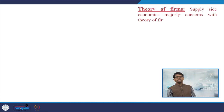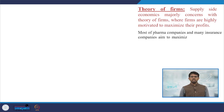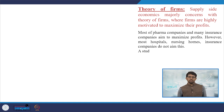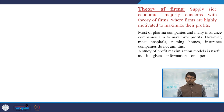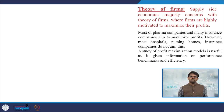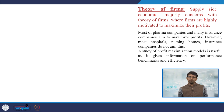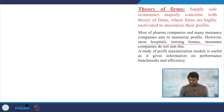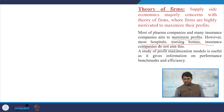We are linking this discussion to the theory of firms, which states that supply-side economics majorly concerns firms that are highly motivated to maximize their profit. Most firms and many insurance companies target profit maximization. However, most hospitals, nursing homes, and some insurance companies do not aim for this. The study of the profit maximization model is still useful as it gives information on performance benchmarks and efficiency.